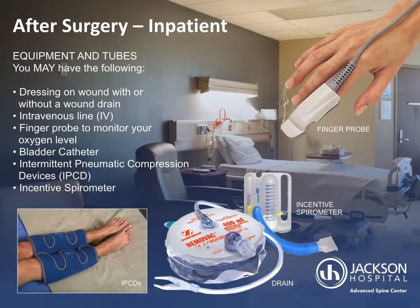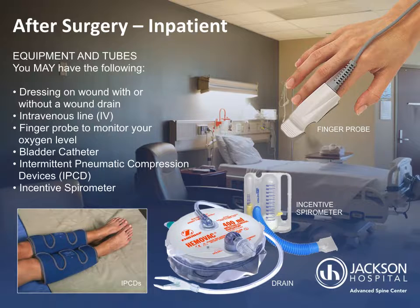Patients admitted to the hospital may have the following equipment and tubes after surgery: a dressing on your wound, possibly with a wound drain; an intravenous (IV) line; a finger probe for monitoring your oxygen level; a bladder catheter for collecting urine; intermittent pneumatic compression devices (IPCDs) to help decrease your risk of blood clots; and an incentive spirometer to help you take deep breaths and decrease your chance of post-op pneumonia. These items will be gradually discontinued throughout your hospital stay.